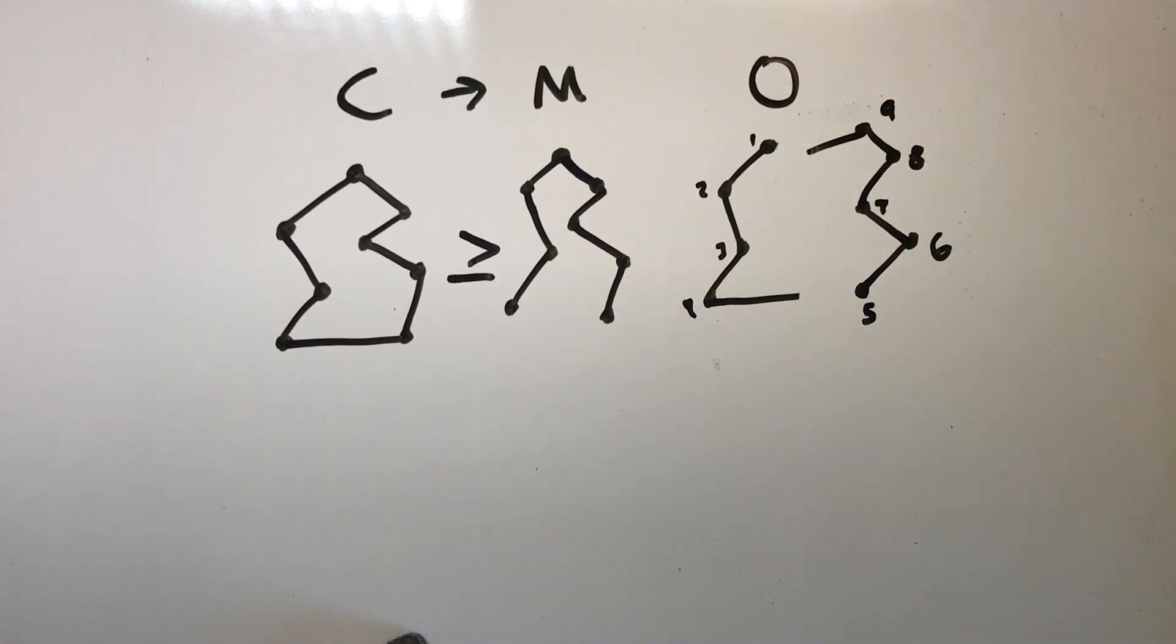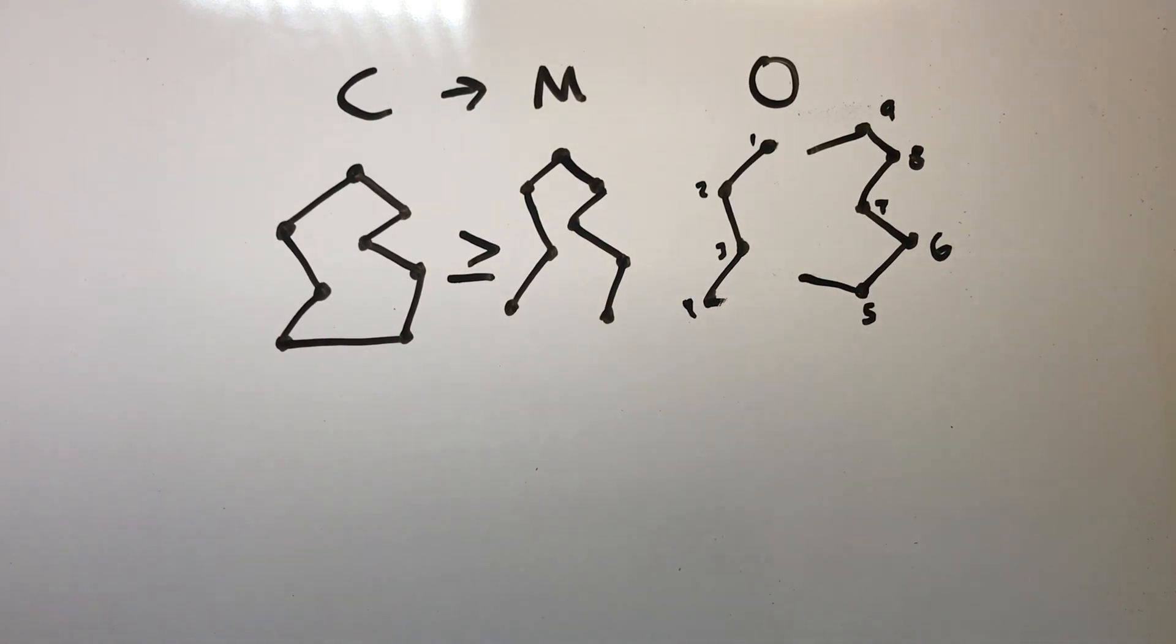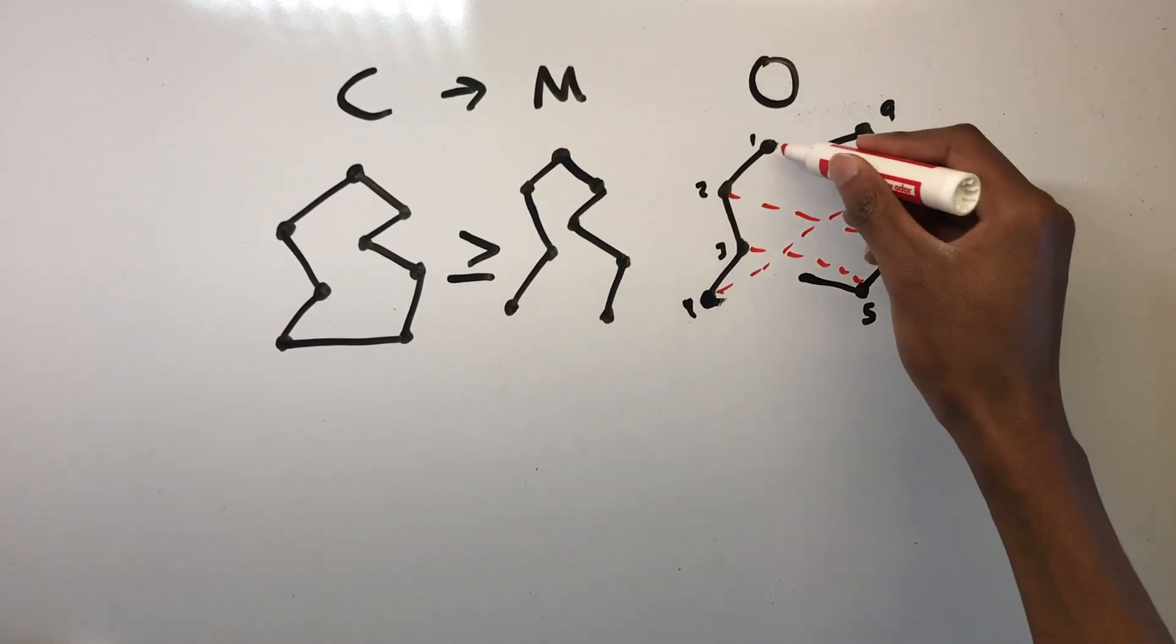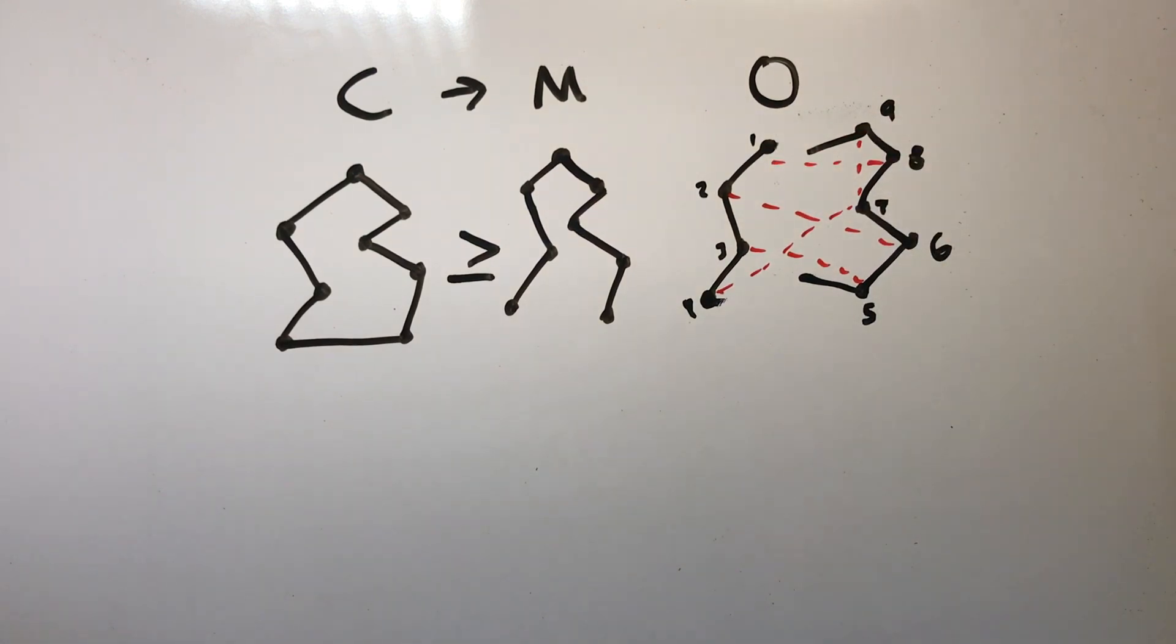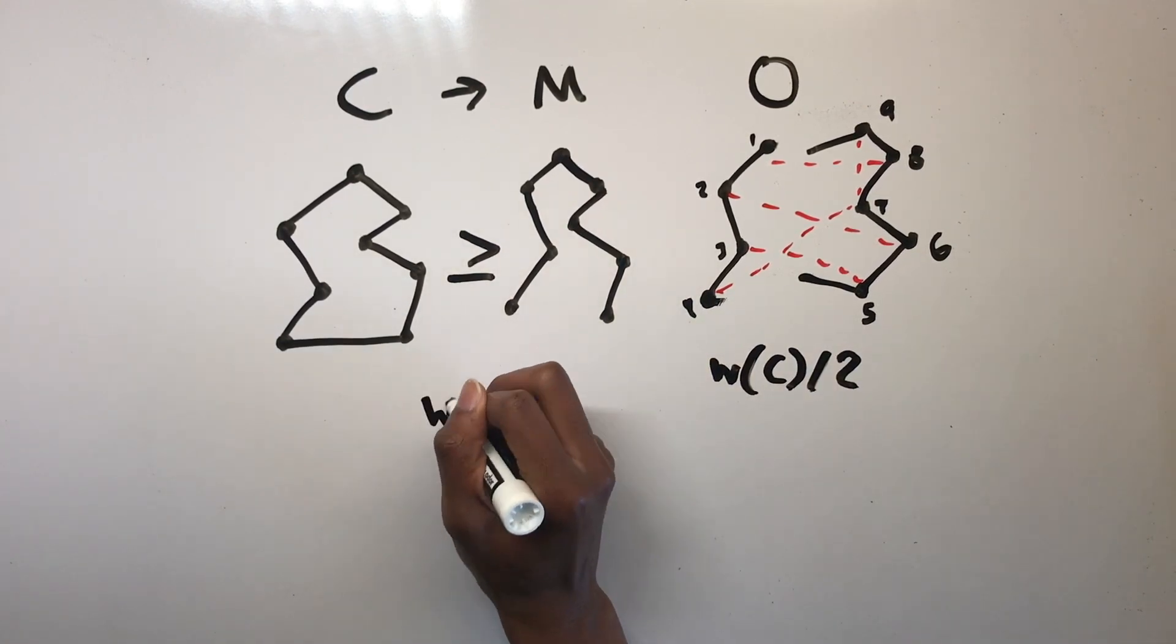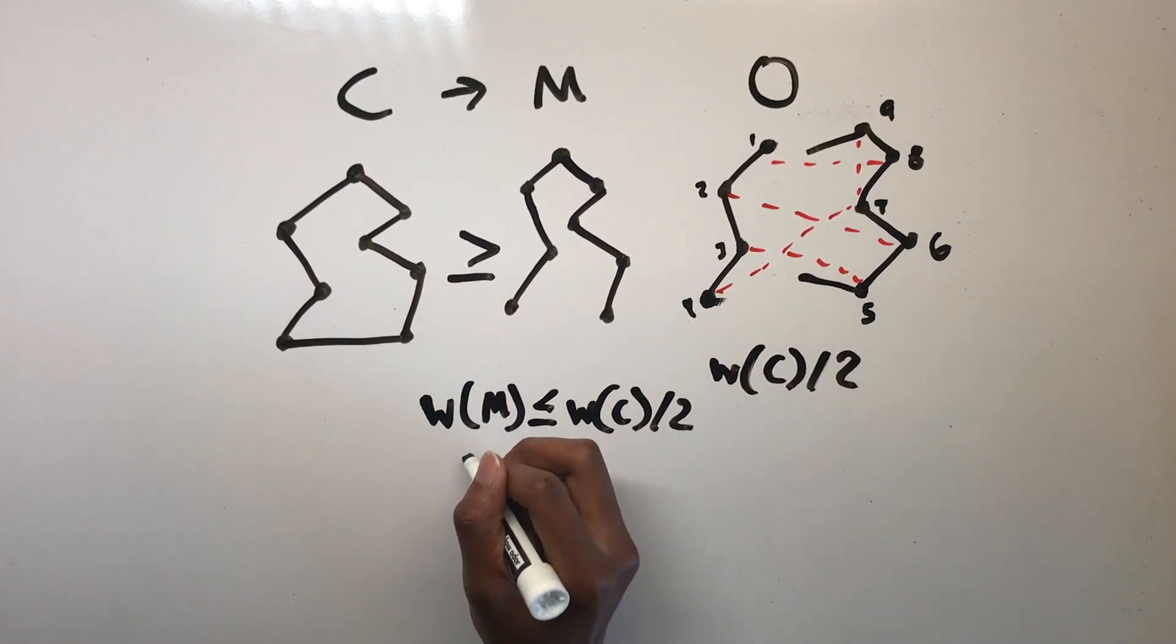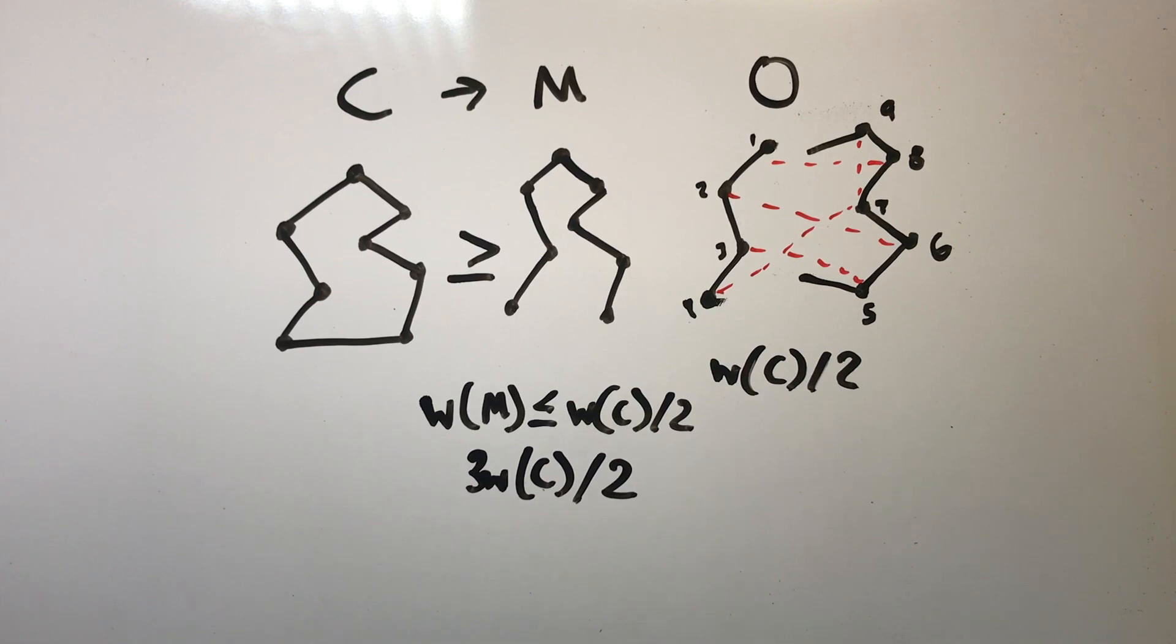Since these two sets of paths partition the edges of C, one of the two sets has at most half of the weight of C, and its corresponding matching has a weight that is also at most half of the weight of C. The minimum weight perfect matching can have no larger weight, so the weight of the perfect matching is less than or equal to the weight of the optimum path divided by 2. Adding the weights of the minimum spanning tree and the matching gives the weight of the Eulerian tour at most 3 times the weight of the optimum path divided by 2. Short cutting does not increase the weight, so the weight of the output is at most 3 times the weight of the optimum path divided by 2.